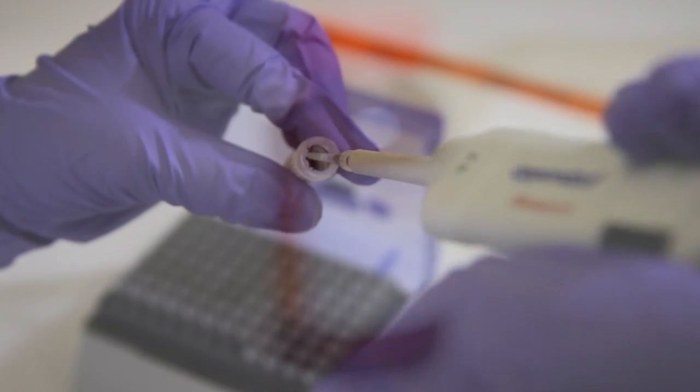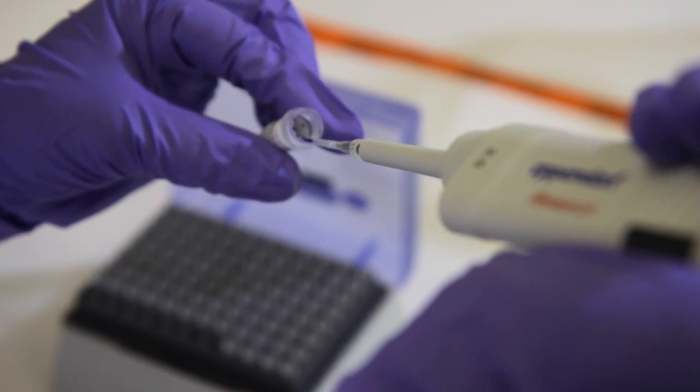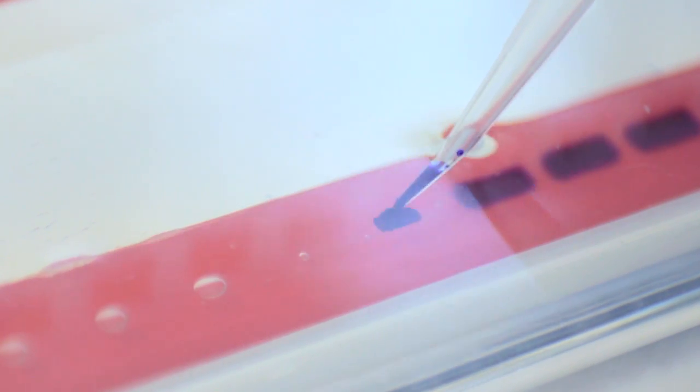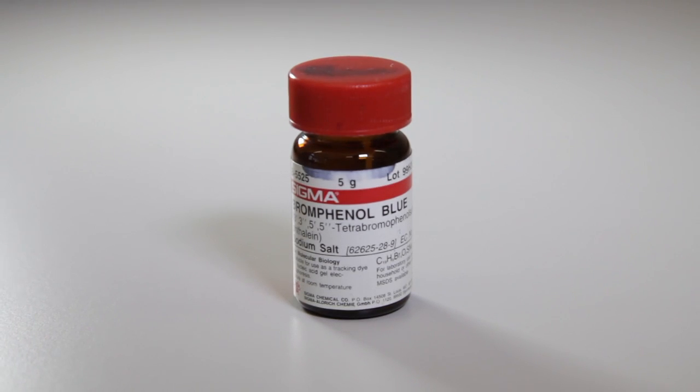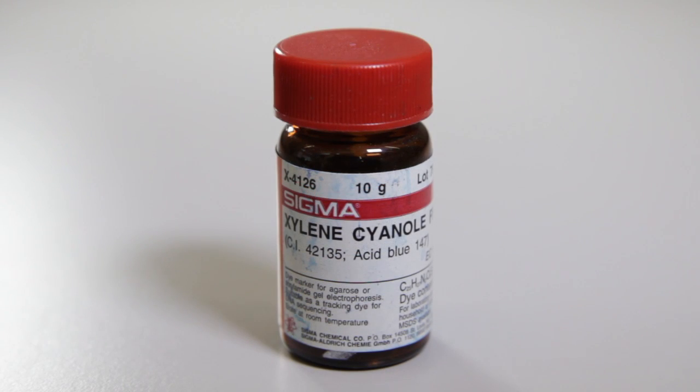The precise amount of dye is not important. Use about a 1 to 5 ratio with each sample. However, it is important that you don't have overlap of your dye and expected DNA size. For example, if you are expecting a band of 200-400 base pairs you shouldn't use bromophenol blue as it will run at the same pace and obscure your product. In this case you should use a larger dye like xylene cyanol.